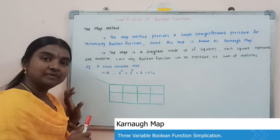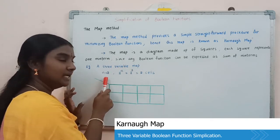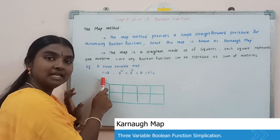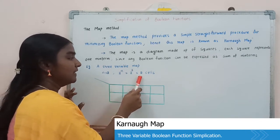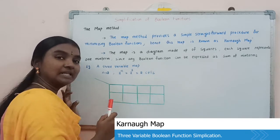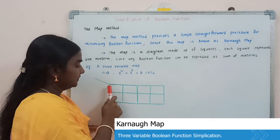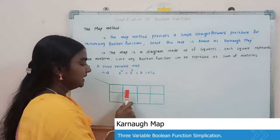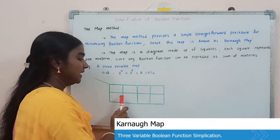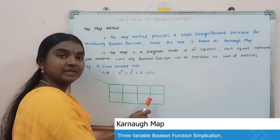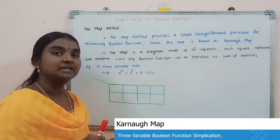If we consider the three-variable map, the number of variables n equals 3. By using 2 to the power n, we find there are 8 cells. For a three-variable map, this graphical chart consists of 8 cells, and each cell represents one min term.